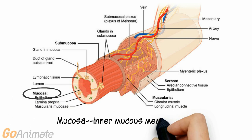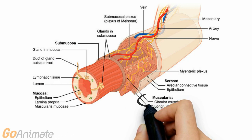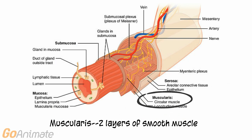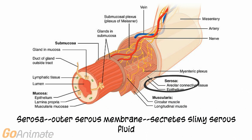The tube consists of four layers. There is an inner mucous-secreting mucosal layer, a submucosa that contains blood and lymphatic vessels, a muscular layer that contains two layers of smooth muscle — one layer that runs along the length of the tube as well as a layer that encircles the tube. An outer serosa or serous layer secretes a slimy serous fluid.